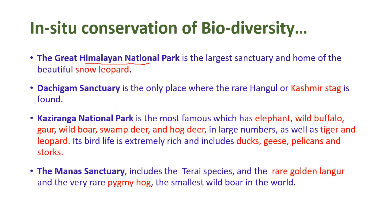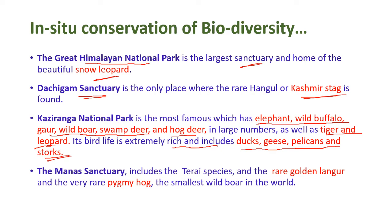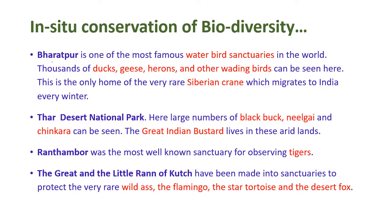The Great Himalayan National Park is the largest sanctuary and home to the snow leopard. The Dachigam Sanctuary is the only place where the rare Hangul or Kashmiri stag is found. Kaziranga National Park is famous for elephants, wild buffalo, gaur, wild boar, swamp deer, and hog deer, as well as tigers and leopards, with extremely rich bird life including ducks, geese, pelicans, and storks. The Manas Sanctuary includes tiger species, the rare golden langur, and the very rare pygmy hog — the smallest wild boar in the world.